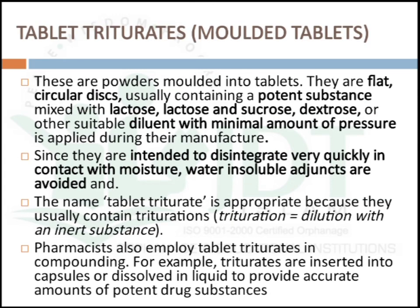The last type is tablet triturates or molded tablets. These are powders molded into tablets — flat, circular discs usually containing potent substances mixed with lactose, sucrose, or dextrose and other suitable diluents, with minimum pressure applied during manufacturing. Since they are intended to disintegrate very quickly in contact with moisture, water-insoluble adjuvants should be avoided. Pharmacists employ tablet triturates in compounding — for example, triturates are inserted in capsules or dissolved in liquid to provide an accurate amount of a potent drug substance.